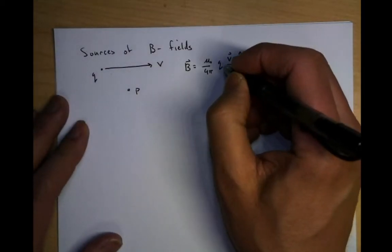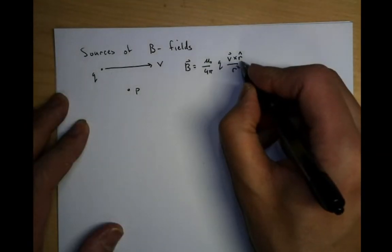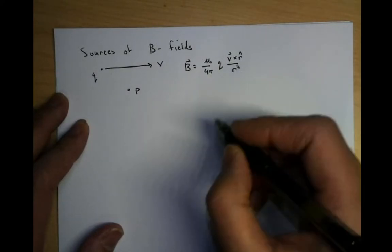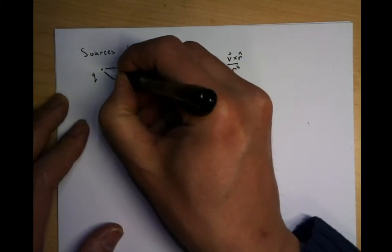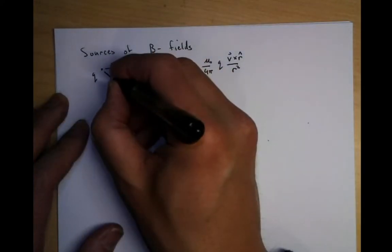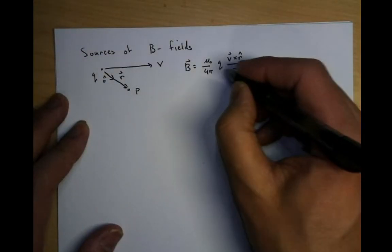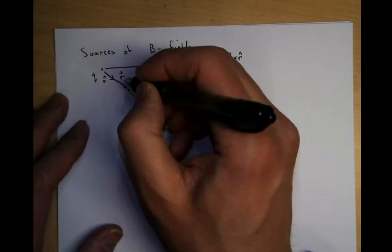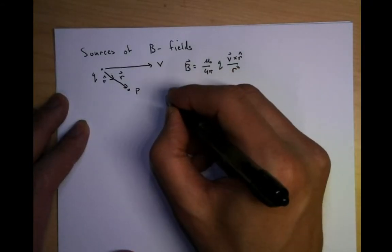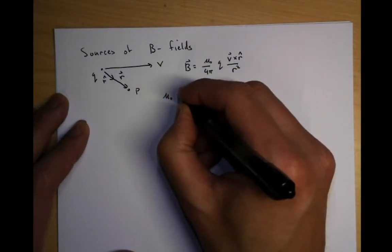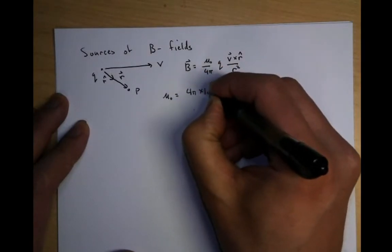Let's go through what each one means. The r vector is the vector that goes from the charge to the point of interest. R hat is just a unit vector in that direction. R is just the magnitude of it, which is essentially the distance between point charge Q and point P. This mu zero has a special value — it's actually 4 pi times 10 to the minus 7.